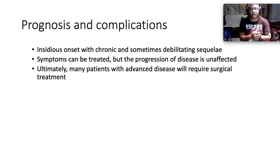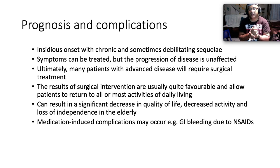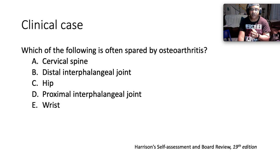In terms of prognosis and complications, osteoarthritis has an insidious, grumbling onset with chronic and sometimes debilitating sequelae. Symptoms can be treated but progression of disease is unaffected. Many patients with advanced disease will eventually require surgical treatment. Results of surgical intervention are usually favorable, allowing patients to return to activities of daily living and improving confidence and independence. Without successful intervention, OA can result in significant decrease in quality of life, reduced activity, and loss of independence in the elderly. Medication-induced complications include the risk of GI bleeding with NSAIDs.